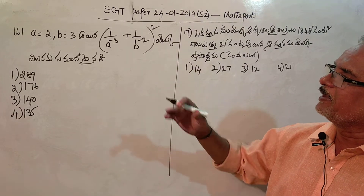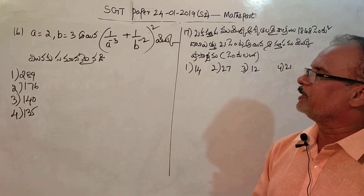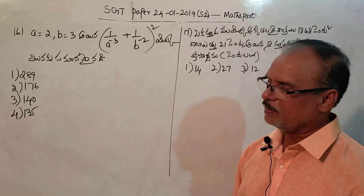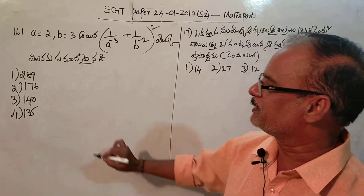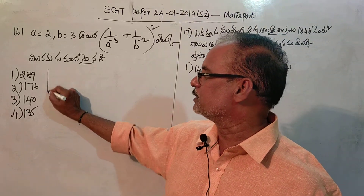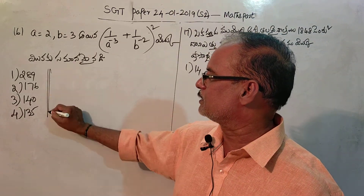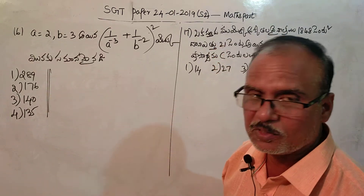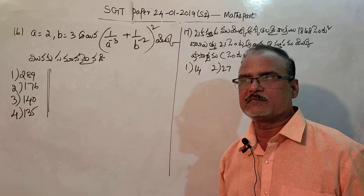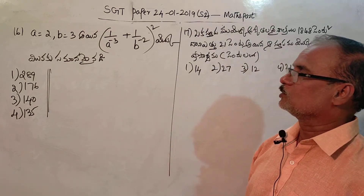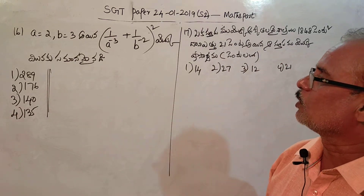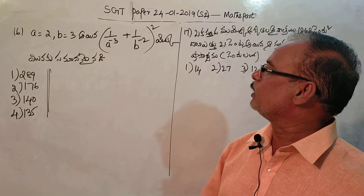Okay, simplification. A is equal to 2 and B is equal to 3. A is equal to 2 and B is equal to 3.